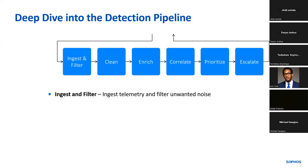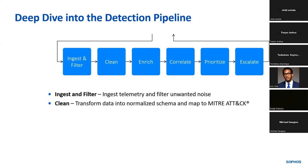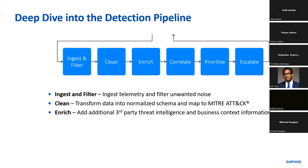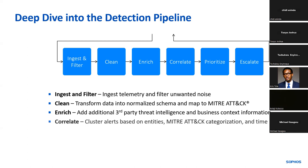The first step is to ingest telemetry from multiple sources and remove unwanted noise — we only need security events critical to detection. We transform the data into a normalized schema that maps to the MITRE ATT&CK framework. Once cleaned, we enrich it with third-party threat intelligence such as Cisco Talos, which adds context to detections. We then correlate alerts based on entities, MITRE ATT&CK categorization, and timestamps.